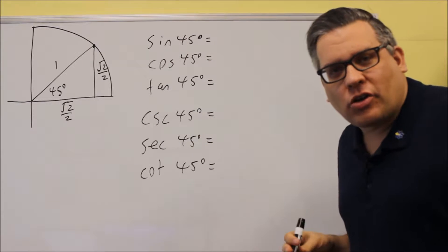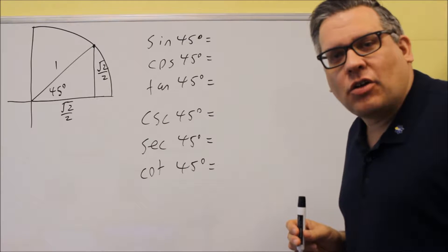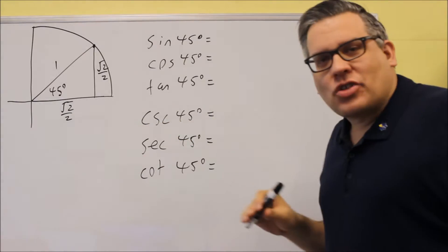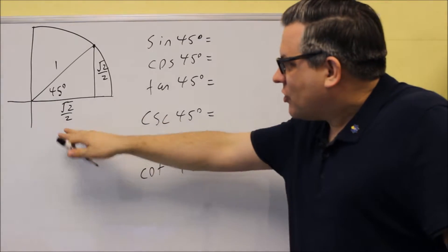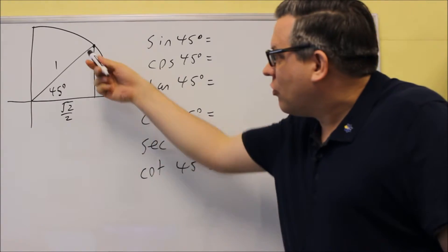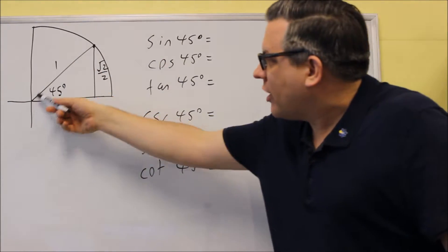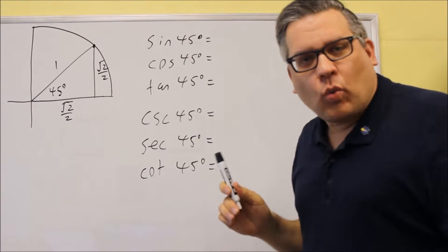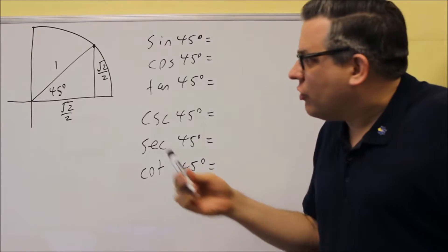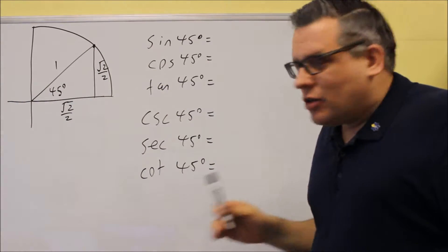There are three particular angles that we're going to focus on. We're going to start with the 45 degree angle and take a look at where we have some exact values. If you draw a 45 degree angle like this, and we're talking about the unit circle, the hypotenuse is going to be 1 because that's the radius. When you draw it like that, you do get exact values.